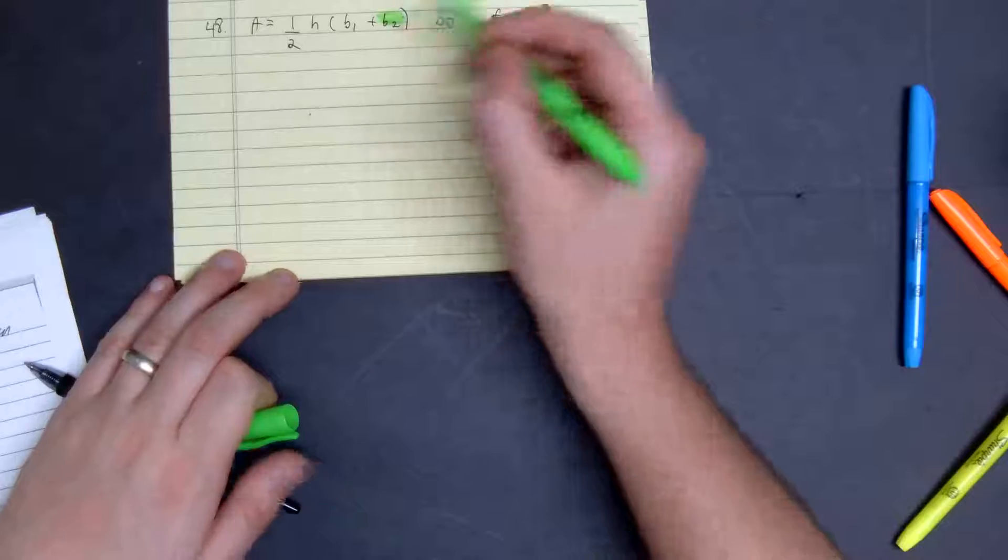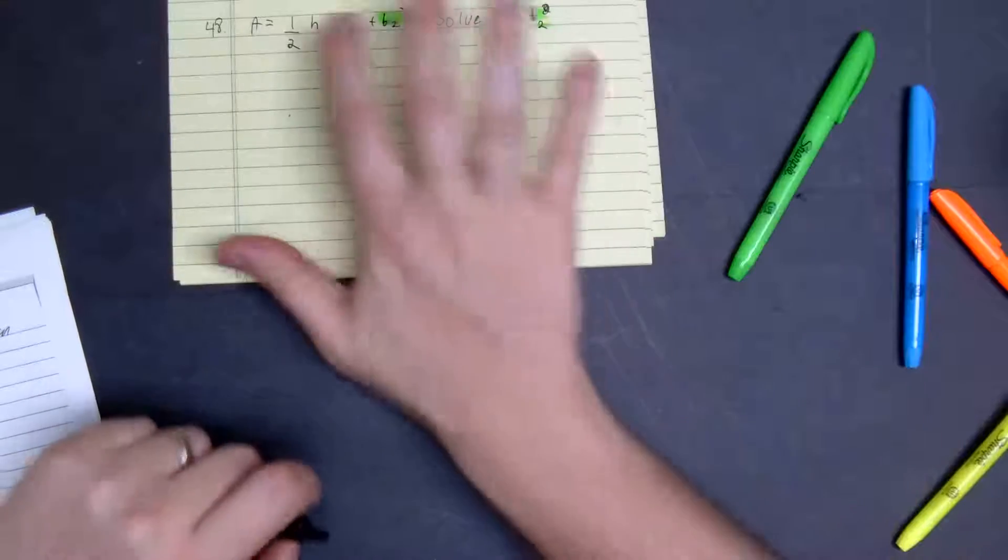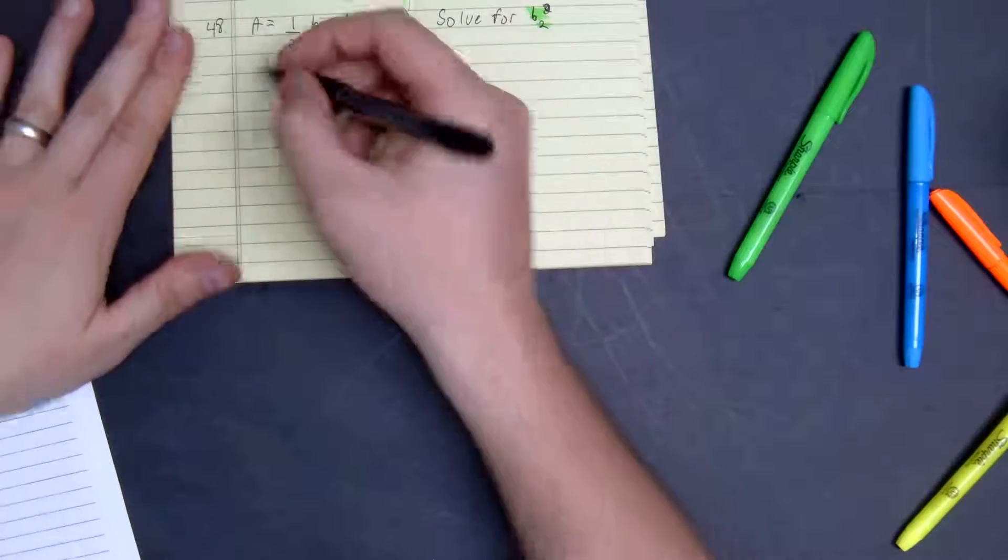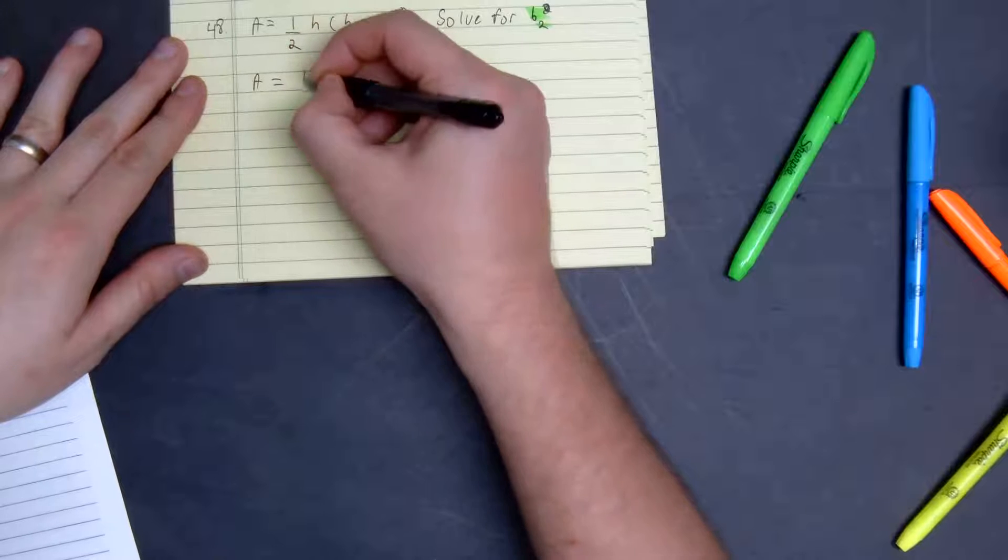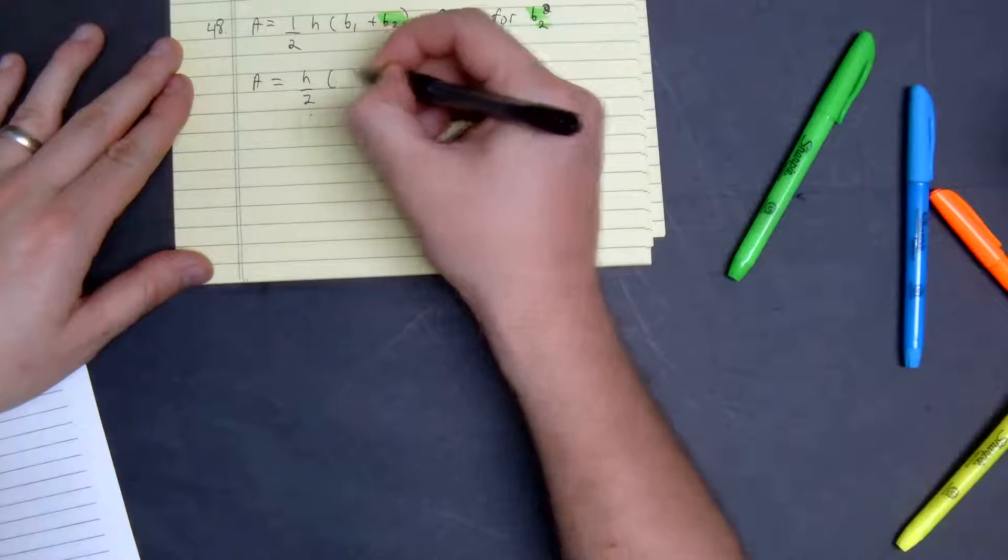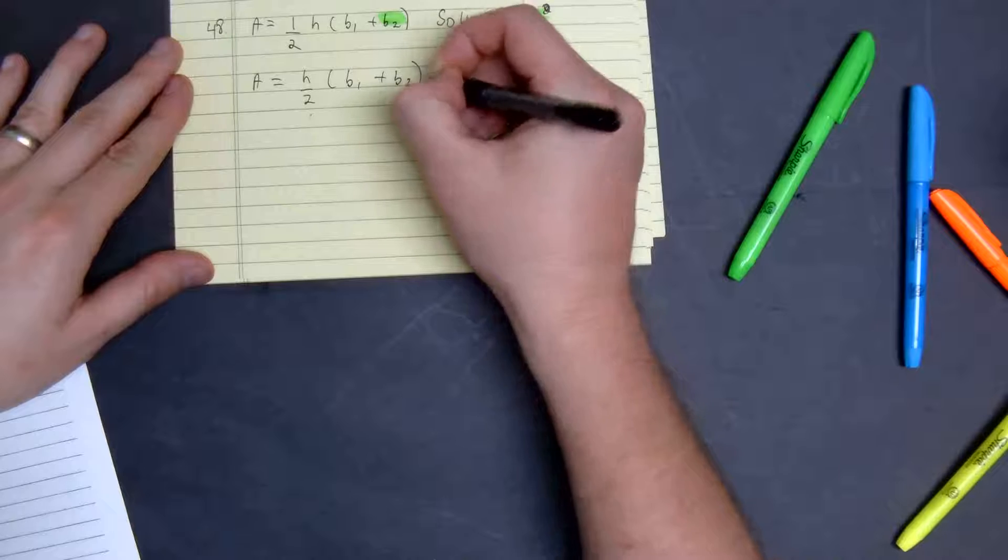So we want to isolate base two. Right away, I can see combining the one-half and h, so we get area equal to h divided by two times the quantity of base one plus base two.